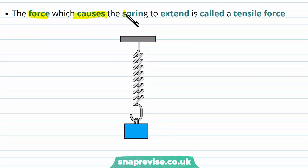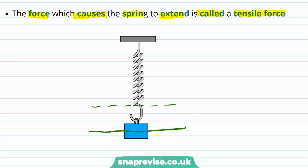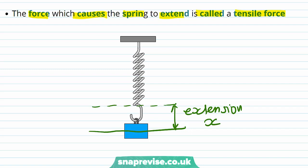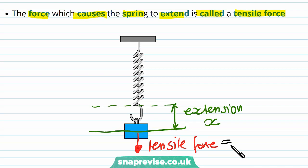The force which causes the spring to extend is called a tensile force. The spring now has an extension X because applying the mass has created a tensile force acting on the spring. This tensile force is due to the weight of the mass, and we know that the weight of an object is given by its mass m times the gravitational acceleration g.